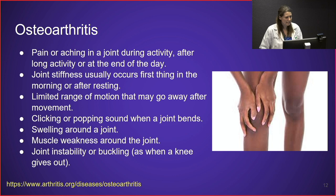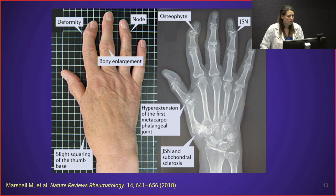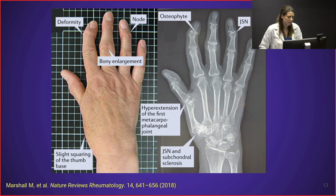Joints can also be unstable or give out, such as the knee. Here is a picture of osteoarthritis in the hand, showing deformity with nodule formation, finger curving, joint enlargement, and squaring at the base of the thumb. On x-ray, you can see osteophytes or bone spurs forming on the side of the joint, joint space narrowing, and deformity compared to normal symmetric, smooth bones.